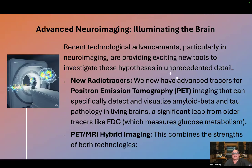Advanced neuroimaging is illuminating the brain. Recent technological advancements, particularly in neuroimaging, are providing exciting new tools to investigate these hypotheses in unprecedented detail. We now have advanced tracers for positron emission tomography (PET) imaging that can specifically detect and visualize amyloid beta and tau pathology in living brains — a significant leap from older tracers like FDG, which measures glucose metabolism.